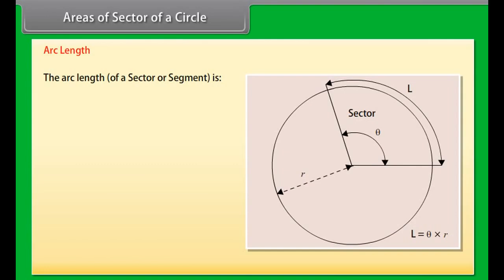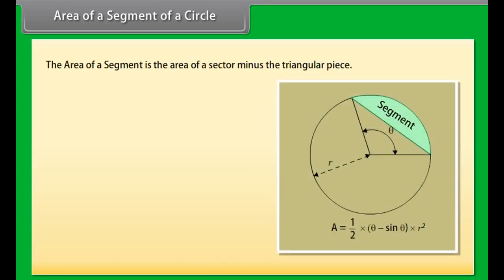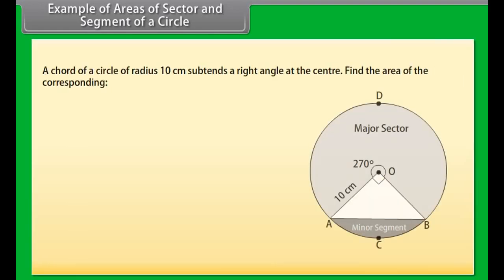Arc Length: By the same reasoning, the arc length of a sector or segment is L equals theta times r when theta is in radians, and L equals theta times (pi / 180) times r when theta is in degrees. Area of a Segment of a Circle: The area of a segment is the area of a sector minus the triangular piece. Area of segment equals (1/2)(theta minus sin theta) times r square when theta is in radians. Area of segment equals (1/2)[(theta times pi / 180) minus sin theta] times r square when theta is in degrees.